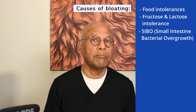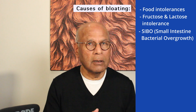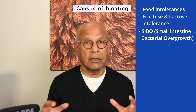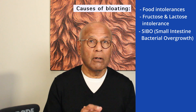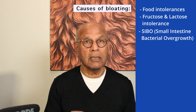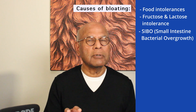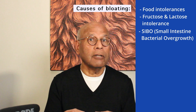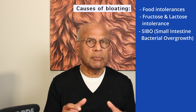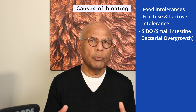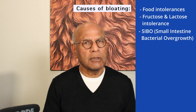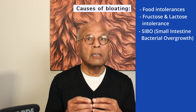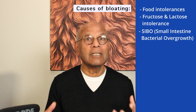SIBO — small intestinal bacterial overgrowth — is another cause. Normally when you eat, food goes into the stomach, then into the small intestine, and then into the large intestine. The small intestine is about 20 feet long and this is where digestion and assimilation take place. To ensure complete absorption of digested nutrients, the body keeps the small intestine relatively free of bacteria. Otherwise, large amounts of bacteria in the small bowel would compete with the body for nutrients. There are a number of mechanisms that keep the small intestine low in bacteria. If these mechanisms get interrupted, bacteria that live in large numbers in the large bowel can move into the small bowel. These bacteria can ferment the food coming into the small intestine and produce gas that leads to bloating.